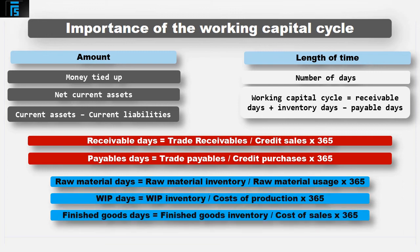And finished goods days equals finished goods inventory, divided by cost of sales, multiplied by 365.